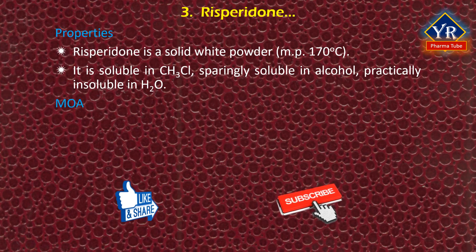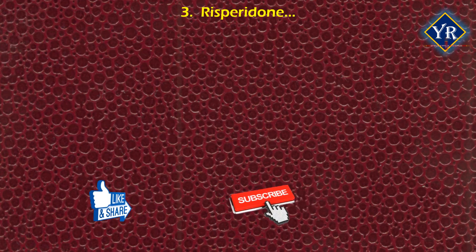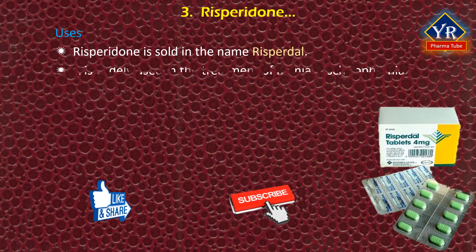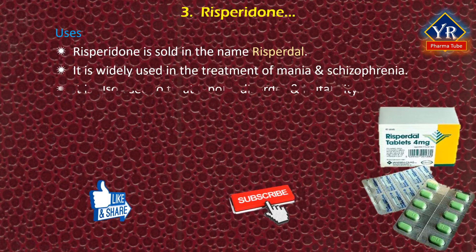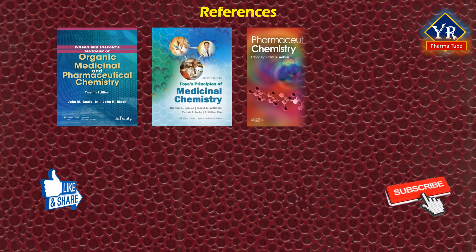Its mechanism of action is not entirely clear but is believed to be related to its action as a dopamine and serotonin antagonist. Risperidone is sold under the brand name Risperdal. It is widely used in the treatment of mania and schizophrenia, and is also used to treat bipolar disorder and irritability associated with autism. It is taken either by mouth or by injection. This is the list of references followed for the lesson.